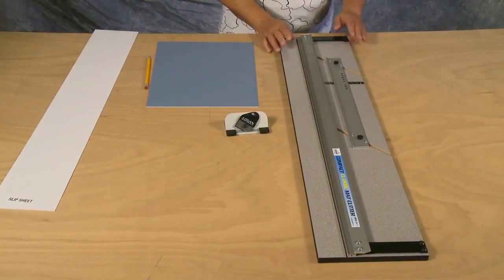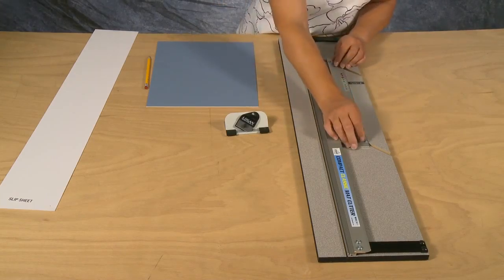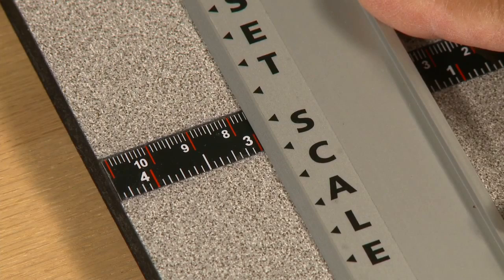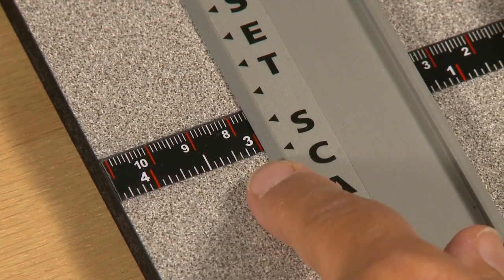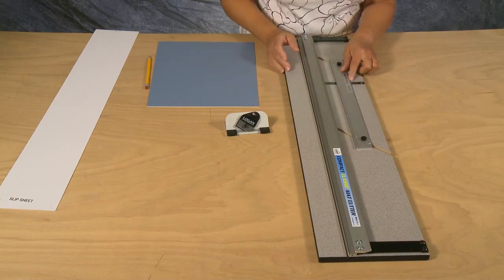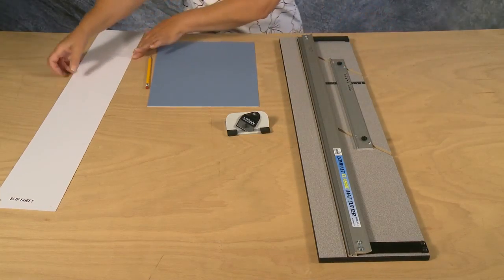To bevel cut an opening in the compact classic mat cutter, first set the mat guide to the board needed. In this example, 3 inches. Always use a slip sheet when bevel cutting.